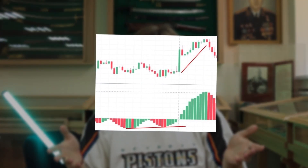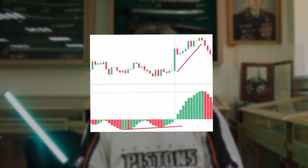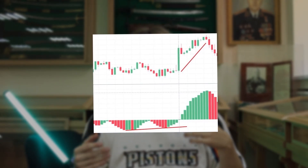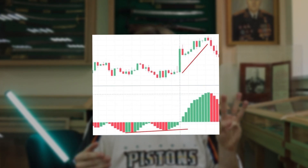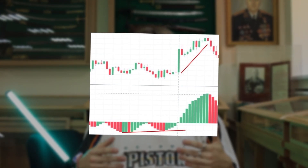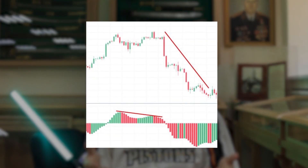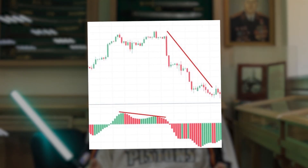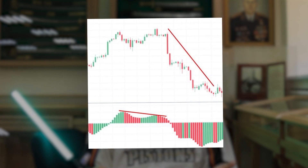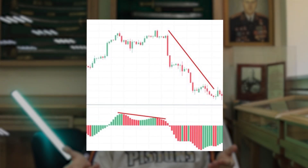Twin peaks: A buy signal is generated if the following conditions are met. First, the indicator value is below the zero line. Second, the second swing low is forming above the first one. Third, the third low formed above the second one confirms the signal. You can look for entry points immediately after the second extreme has formed or at the moment of crossing the zero line. A sell signal is generated when both highs are above the zero line, the second high is below the first one, and the third high is below the second high, confirming the signal.